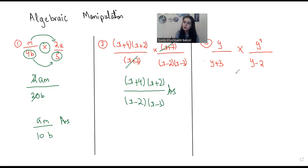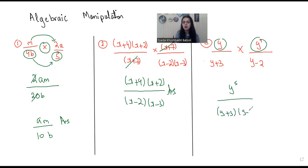The last example also has multiplication: multiplying the numerators gives y to the power 5, divided by (y+3)(y−2). This is going to be the final answer. So these were some questions from the chapter of algebraic manipulation, where we had to convert fractions into simpler versions which were more understandable.